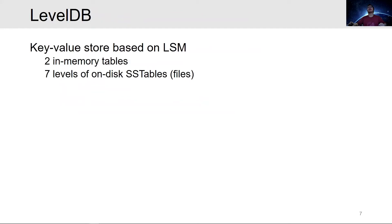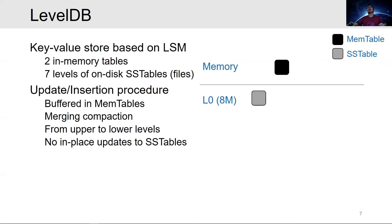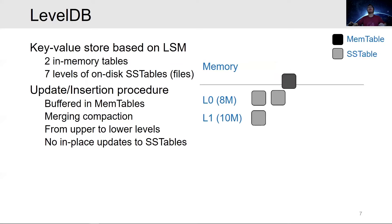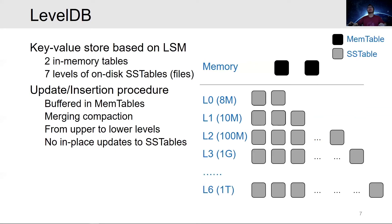I'll give a brief introduction to LevelDB, a key-value store based on LSM tree. It has two in-memory tables and a number of on-disk SSTables organized in seven levels. Each SSTable is represented as a file. Updates and insertions are first buffered in one mem table and then moved to another in-memory table, then compacted into an SSTable on Level 0. This process continues until the size of Level 0 exceeds a certain threshold, at which point tables are compacted to lower levels. This compaction mechanism ensures that there is no in-place updates to SSTables during writes; those tables remain unchanged until deleted by compactions.